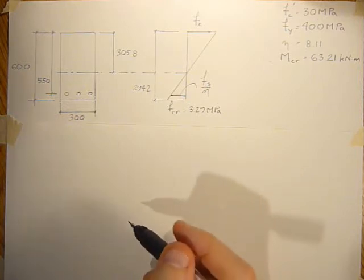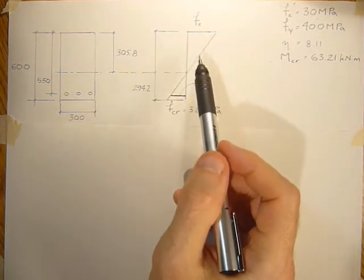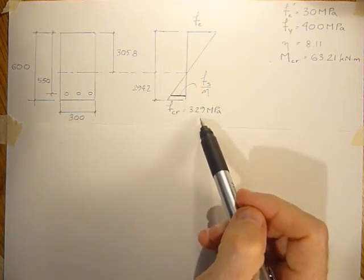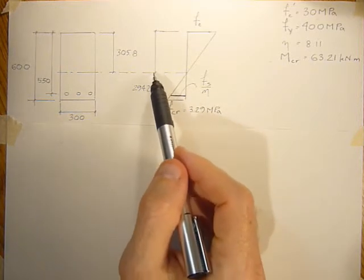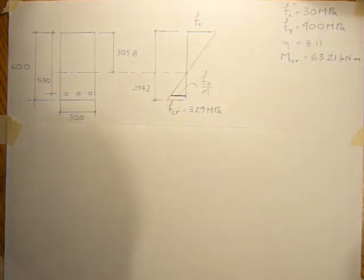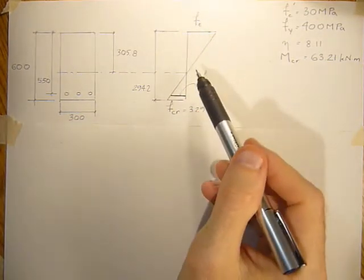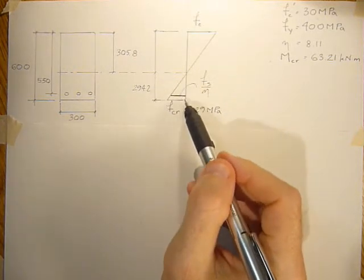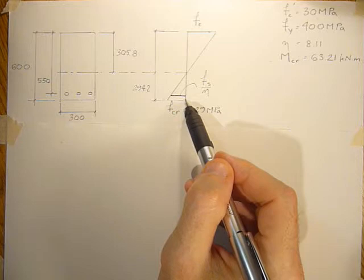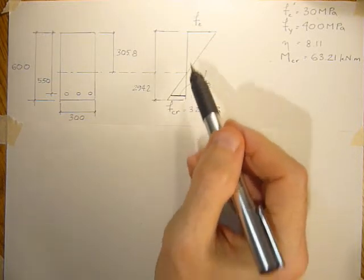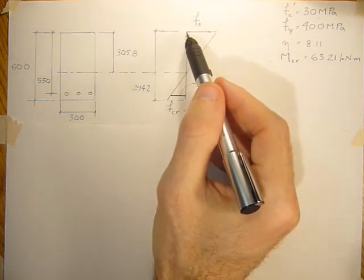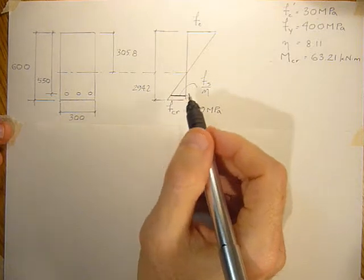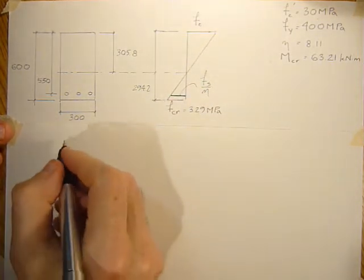So let's start this problem. We have already determined the cracking stress based on 0.6 times the square root of f'c, and we also have the neutral axis worked out based on static moments. So to get the stress in the concrete, we just have to use similar triangles here. The ratio of this triangle's height to base should also equal the ratio of this triangle's height to base, and if we work out the ratios, we would get the stress in the concrete.